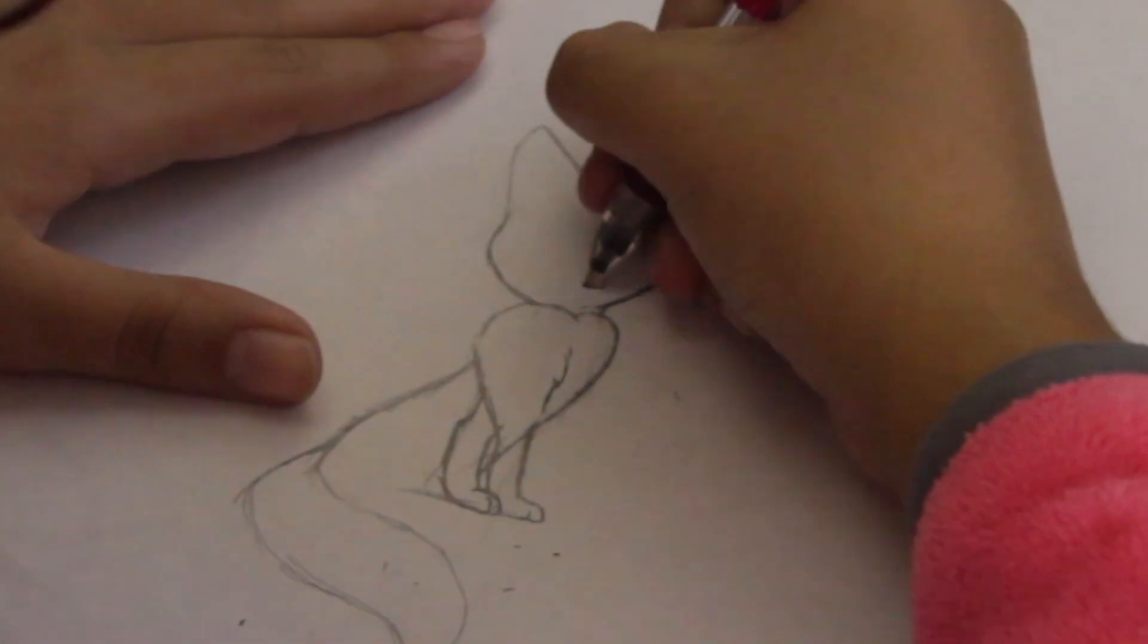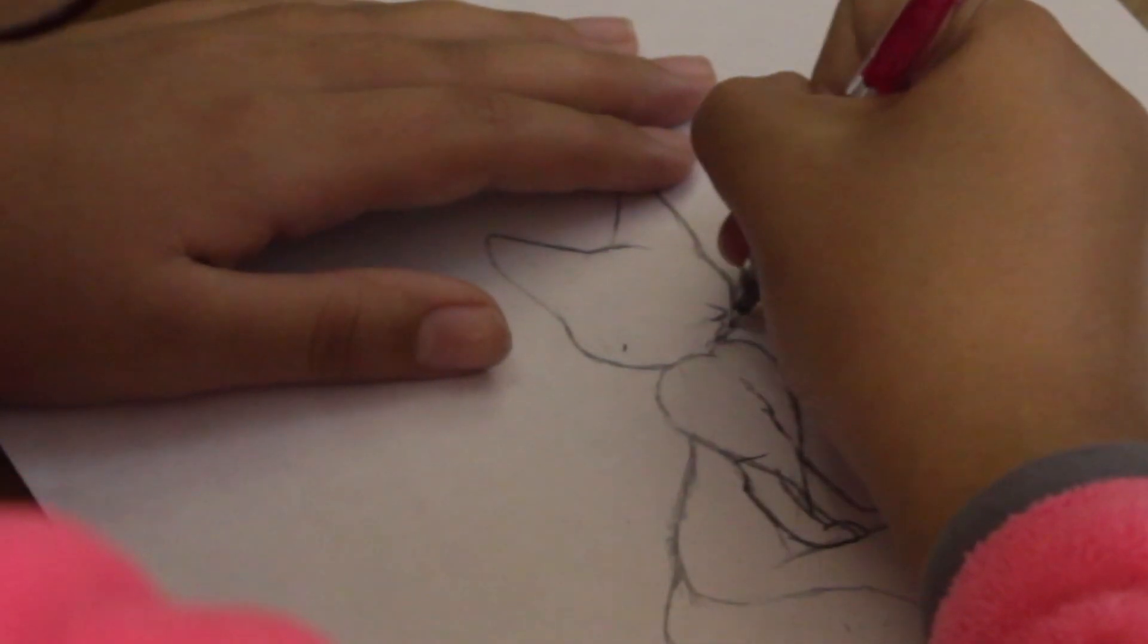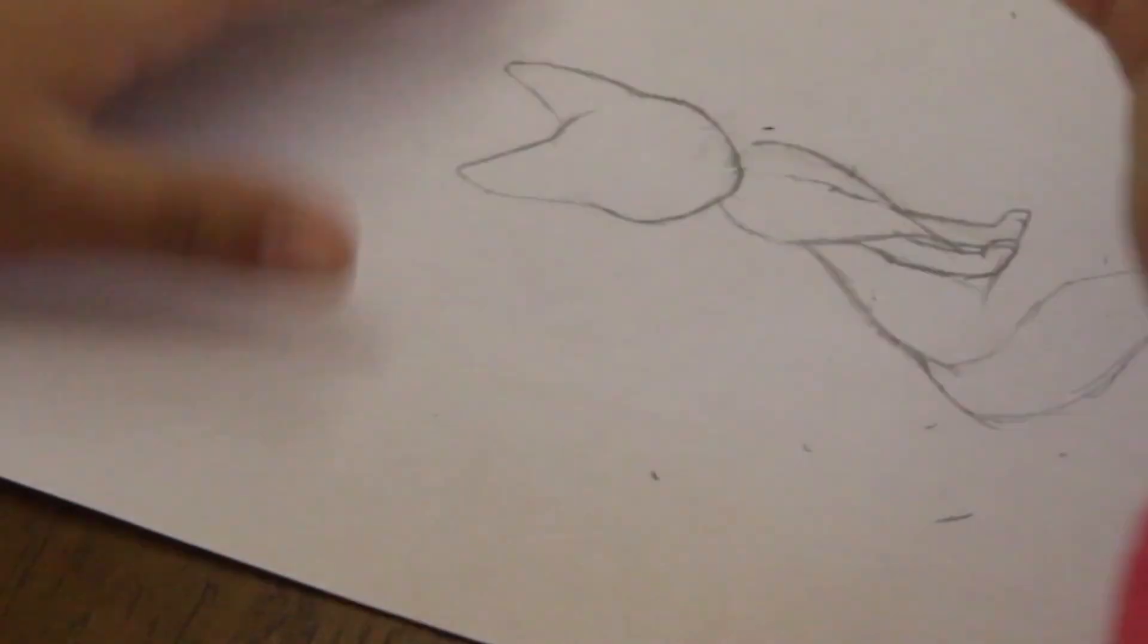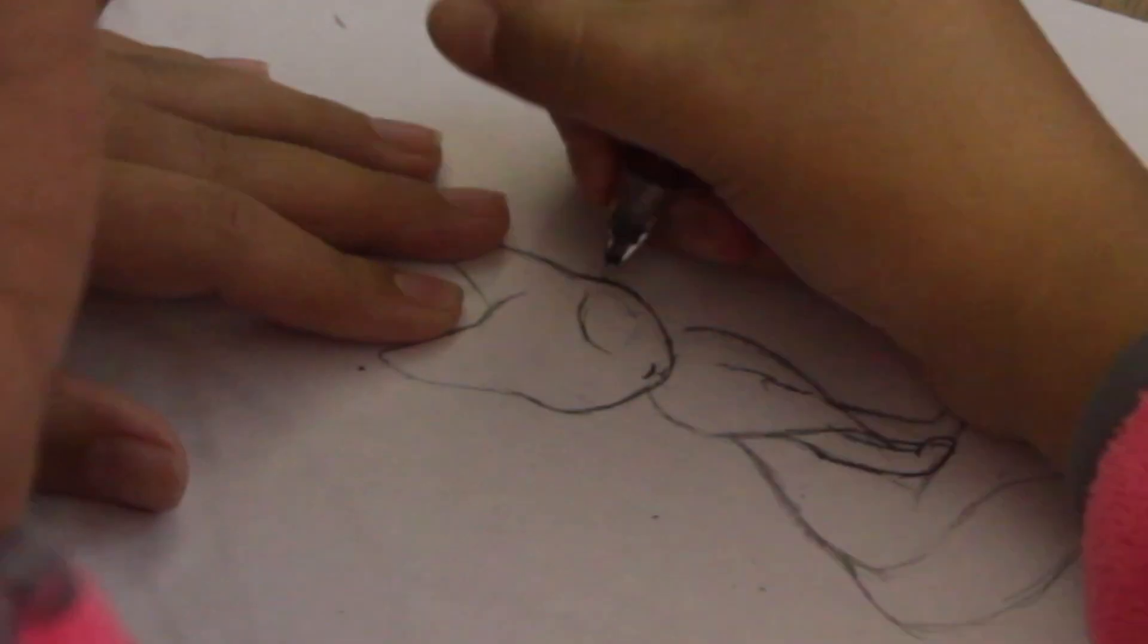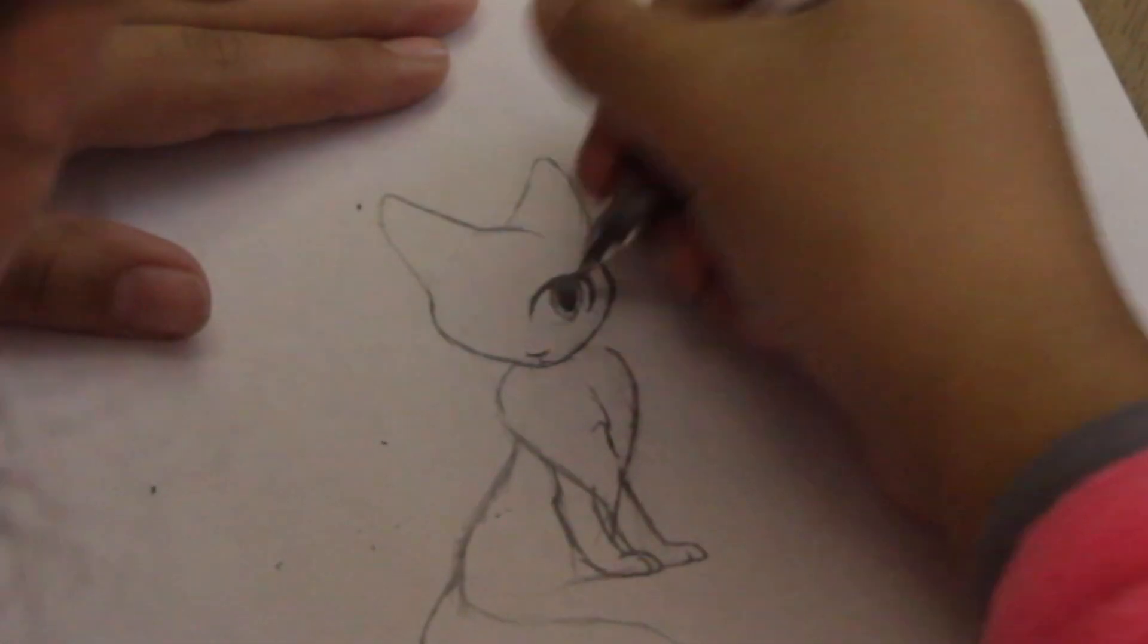Alright, so this drawing is of Heartstar, but it's going to be a reference sheet, just in case I wanted to draw her again, so I could have something to reference back to for her body shape, for her pelt color, anything like that.